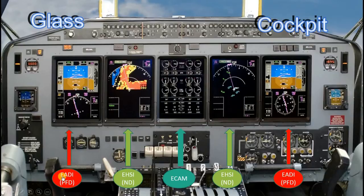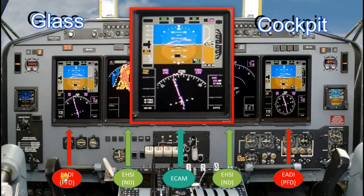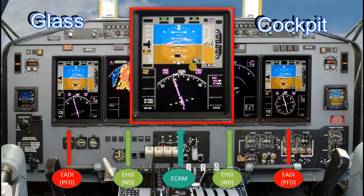The EADI — Electronic Attitude Director Indicator — is a system which can also be called the Primary Flight Display. This is the display that gives information to the pilot about the attitude of the aircraft: how the aircraft is yawing, how the aircraft is pitching, and how the aircraft is rolling.